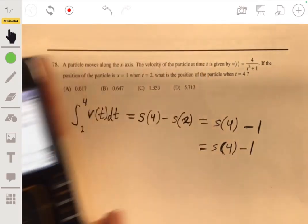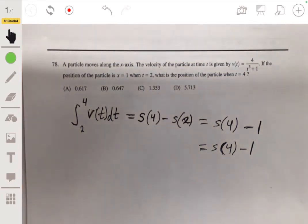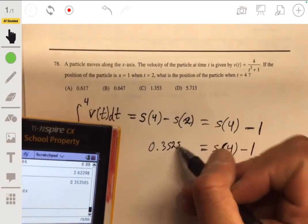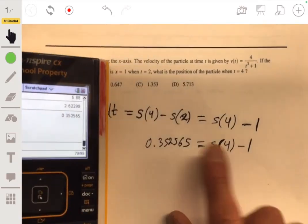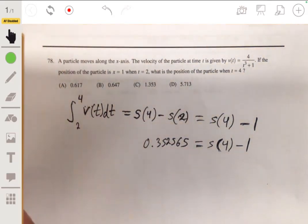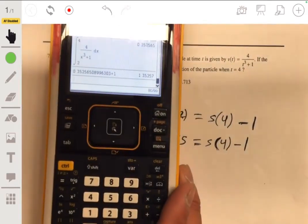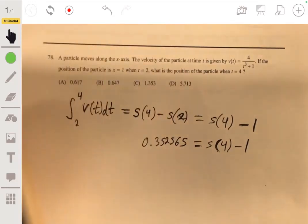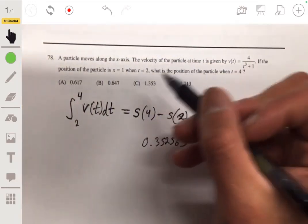And we'll get 0.35-ish, 0.352565 equals this. And so we just add one to this and we'll get s of four from that. And so we'll get about 1.3527, and so the answer will be C.